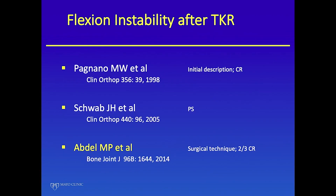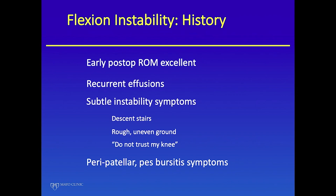We have a long history of articles here — first with CR, then both. One of the things you'll hear from these patients is their therapist said they were the best patient ever in therapy, getting range of motion faster than anybody else. That's pretty easy when you don't have any flexion stability. Most of them have recurrent effusions and complain about going downstairs, down a grade, or on rough and uneven ground — they don't trust their knee and have tender spots around it.